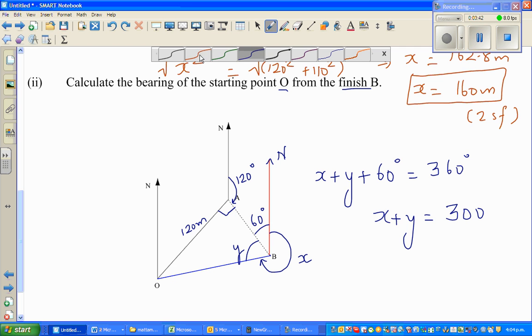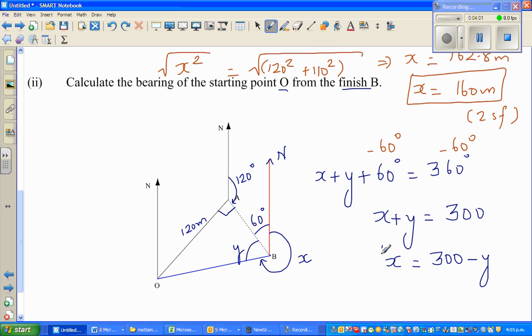Let me show you for those who struggle to understand these steps. 360 minus 60 is 300, so I can say x which is what I want to find is 300 minus y.